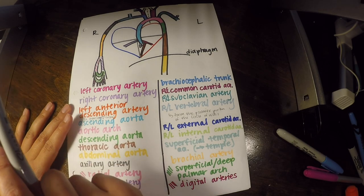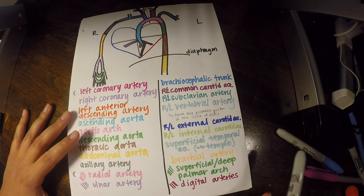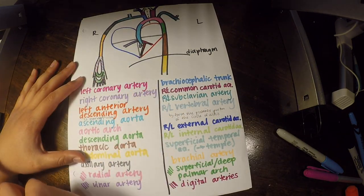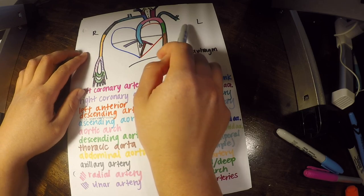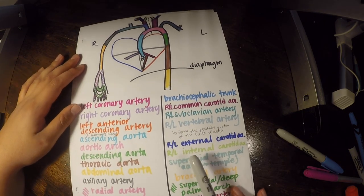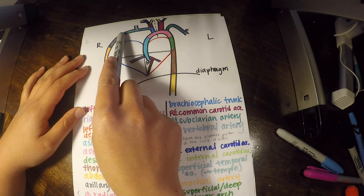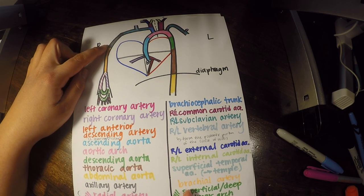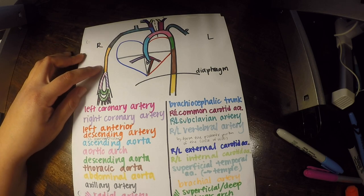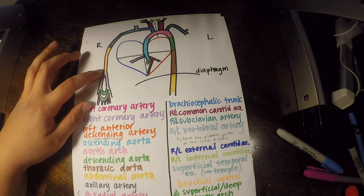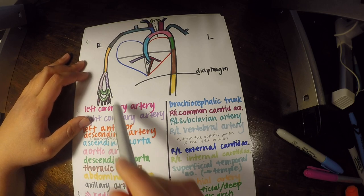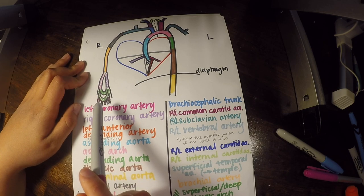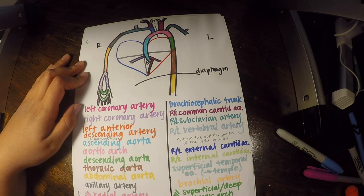We have branches off of these on both sides, and our subclavian artery is going to go to both sides. At the lateral border of the first rib, our subclavian artery turns into our axillary artery, and then in the arm it turns into our brachial artery. On the lateral side that gives way to the radial artery; on the medial side it gives way to the ulnar artery. We'll have a superficial and a deep palmar arch and then digital arteries going into our fingers.